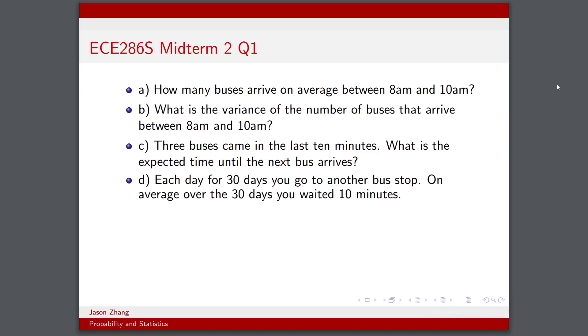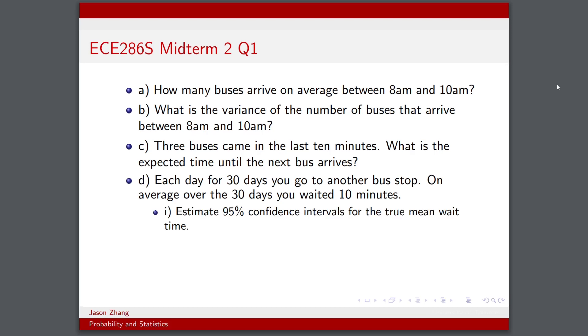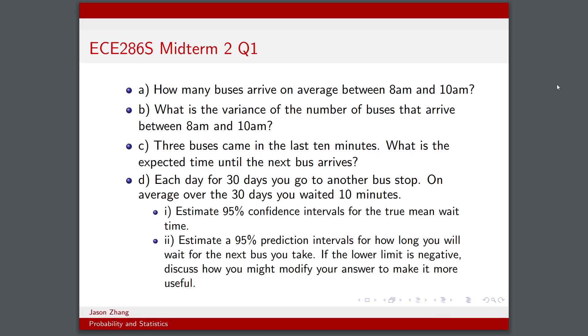Then each day for 30 days you go to another bus stop. On average over the 30 days you waited 10 minutes. Part d.1: estimate 95% confidence intervals for the true mean wait time. Part d.2: estimate a 95% prediction interval for how long you will wait for the next bus you take. If the lower limit is negative, discuss how you might modify your answer to make it more useful.